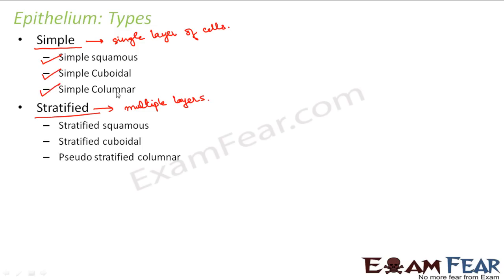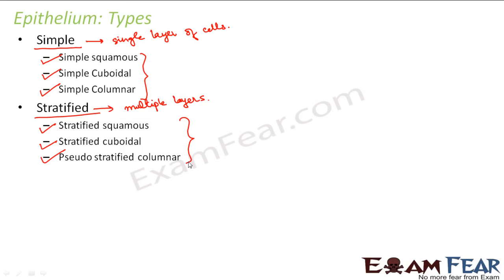These three types are based on the shape of the cells. Depending upon the shape and size of the cells, they have been categorized into these three types. Similarly, under stratified, we have three types: stratified squamous, stratified cuboidal, and pseudo-stratified columnar.